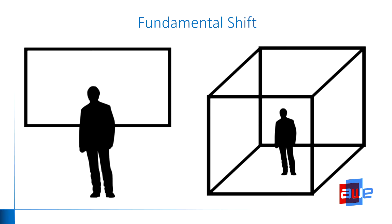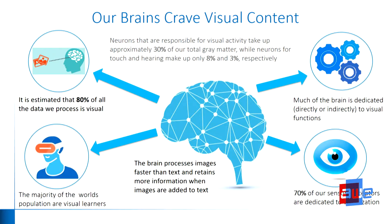What I believe this is leading to is a fundamental shift in not only how we interact with computers and the environment and the space around us, but also how we're going to do design and design review. Right now we're using the HoloLens to do design review — to go into full-scale three-dimensional spaces — but there are folks working on applications where you'll be able to actually change design. This is a fantastic technology because we're visual creatures. Eighty to ninety percent of the information your brain processes comes in through your eyes. Thirty percent of neurons in gray matter process visualization. Touch and hearing are only eight and three percent.